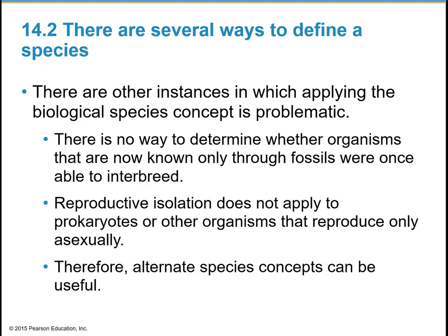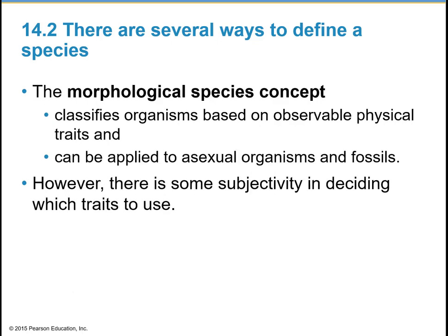There are some other instances in which applying the biological species concept can be problematic. There's no way to determine whether organisms that are now known only through fossils were once able to interbreed. Reproductive isolation does not apply to prokaryotes or other organisms that reproduce only asexually. So alternate species concepts can also be useful. The morphological species concept classifies organisms based on their observable physical traits, and can be applied to asexual organisms and fossils.